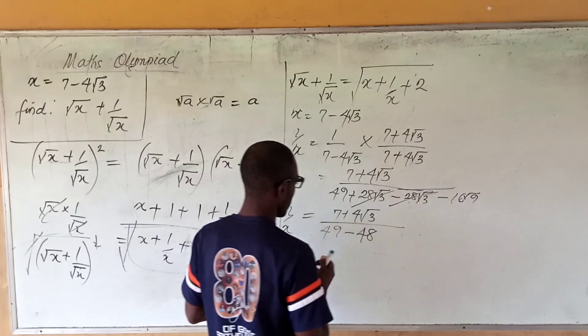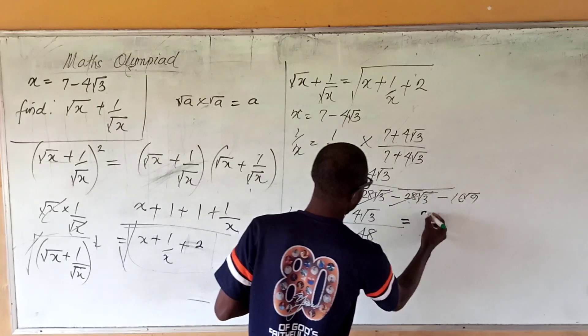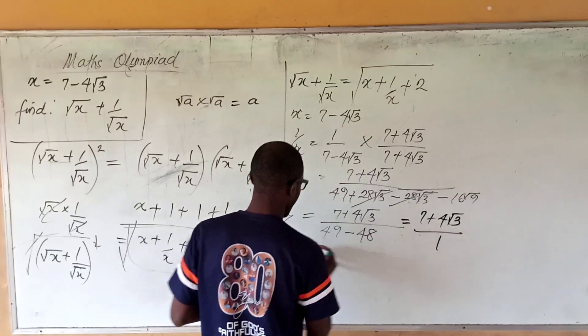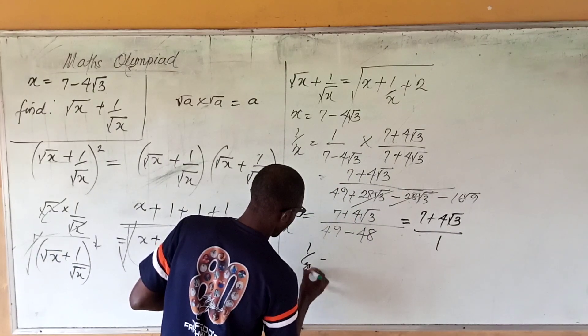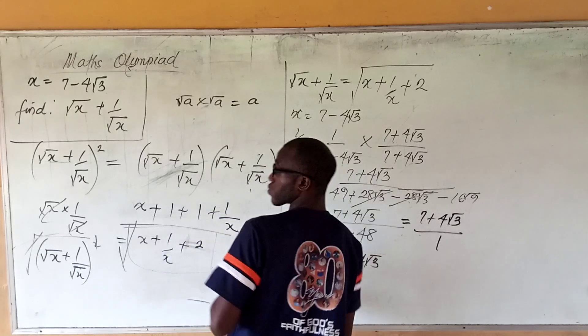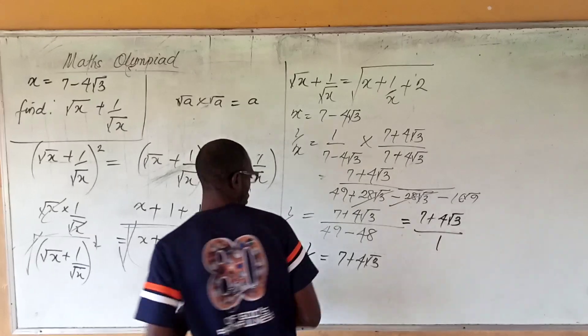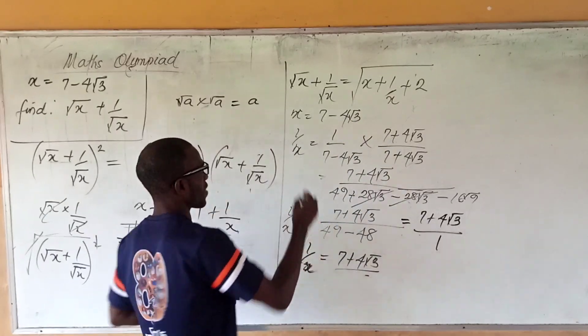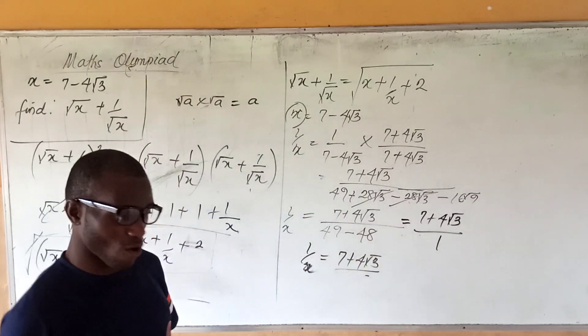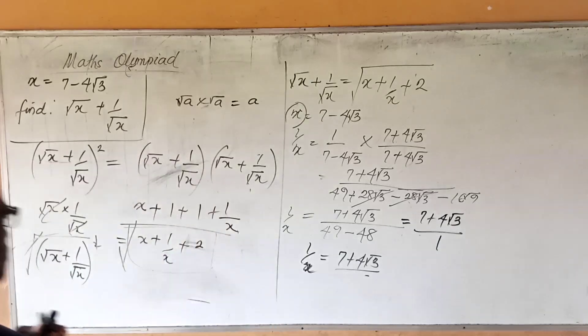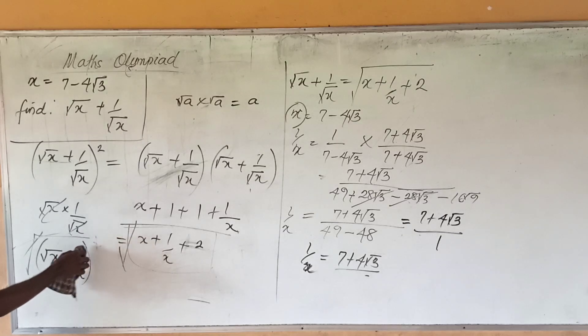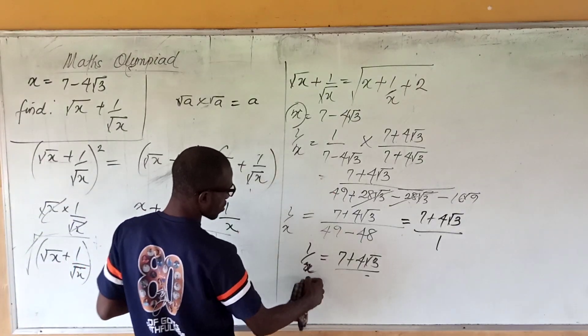So then it becomes (7 + 4√3) all over 1, which is 49 minus 48. So therefore 1/x is 7 + 4√3. So if you look at this, this and this are actually conjugates from what we have here. So the expression is actually very simple.